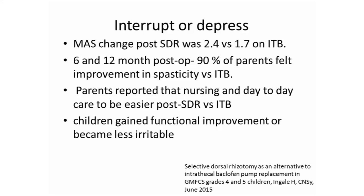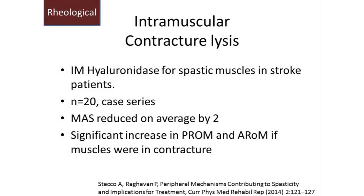Children gained more functional improvement and became less irritable. The last modality addresses the rheological aspect of spasticity: intramuscular hyaluronidase injections, studied in adults with stroke. In a case series of 20 patients, this injection reduced muscle tone by about 2 points, with increases in passive and active range of movement — particularly when muscles were in contracture.